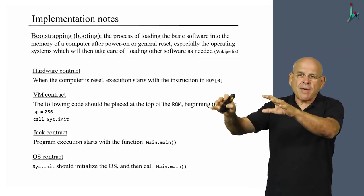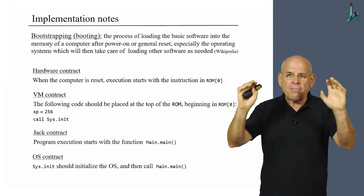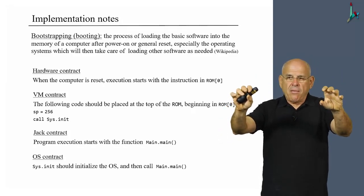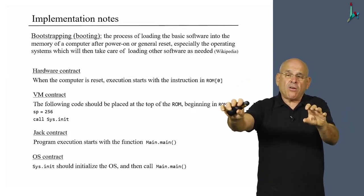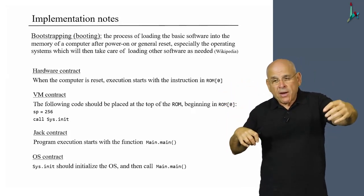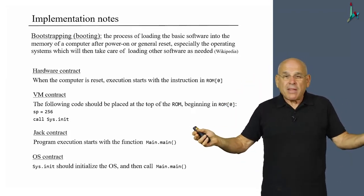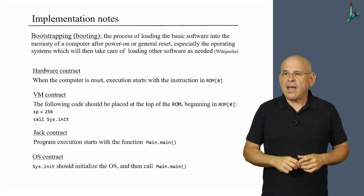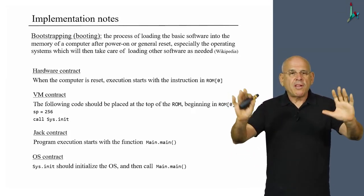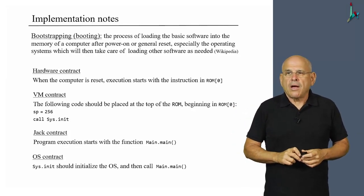The builder of the hardware has to do something. The person or the team that implements the VM translator must obey this contract. The Jack programmers must obey the contracts. The team that builds the operating system. But if each one of these teams that may well have never met each other plays according to the rules of the game, then everything will work smoothly, and then everything will be like a great symphonic orchestra.